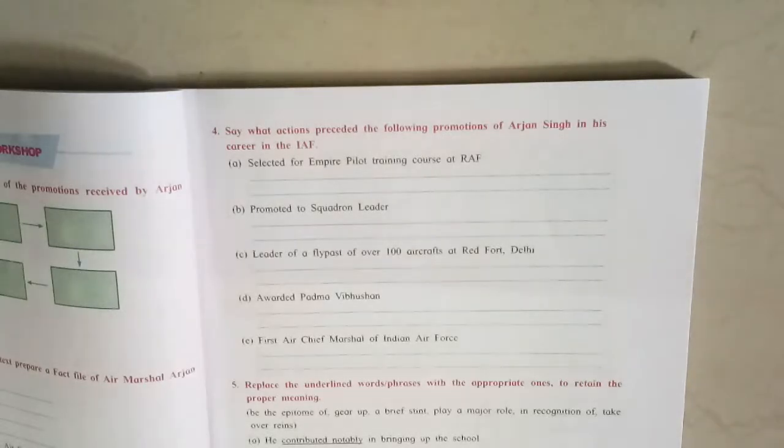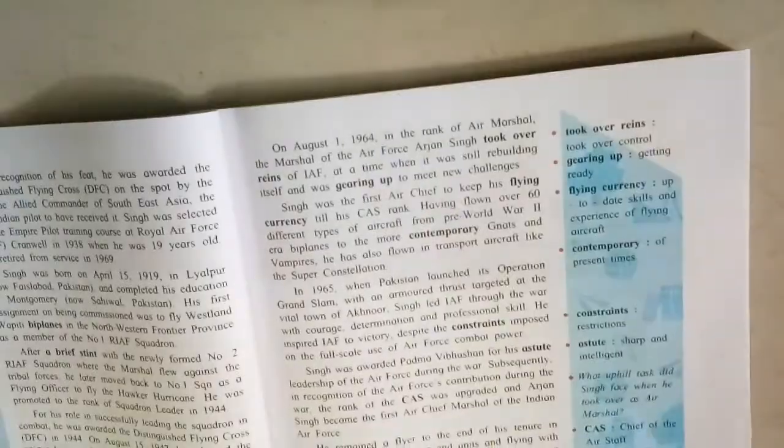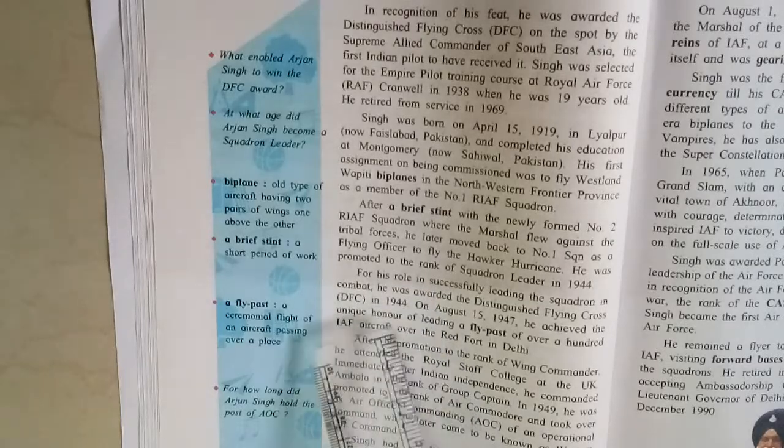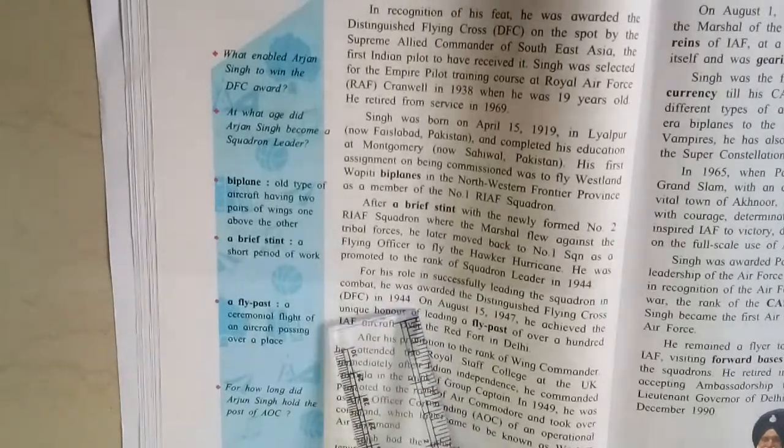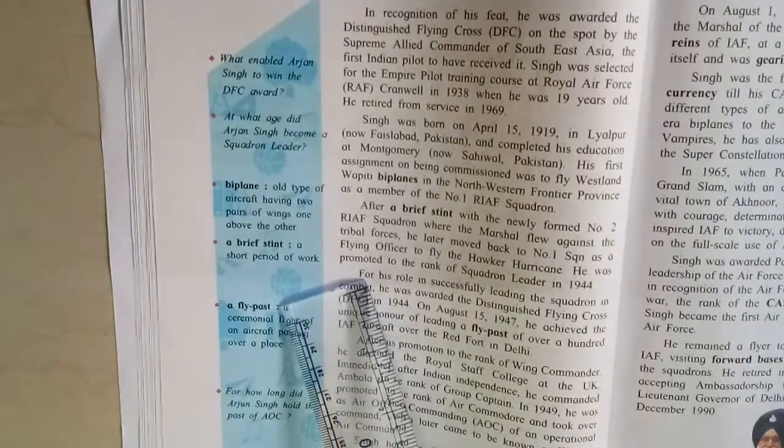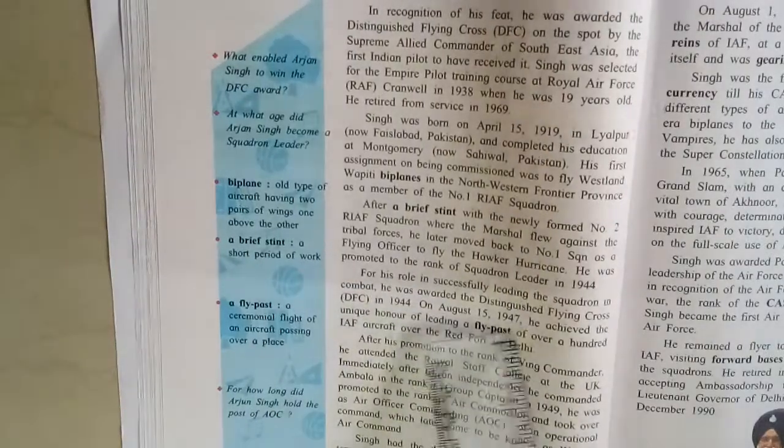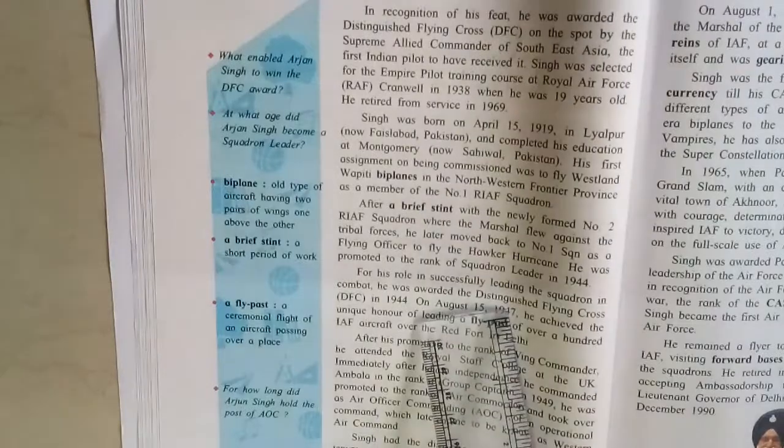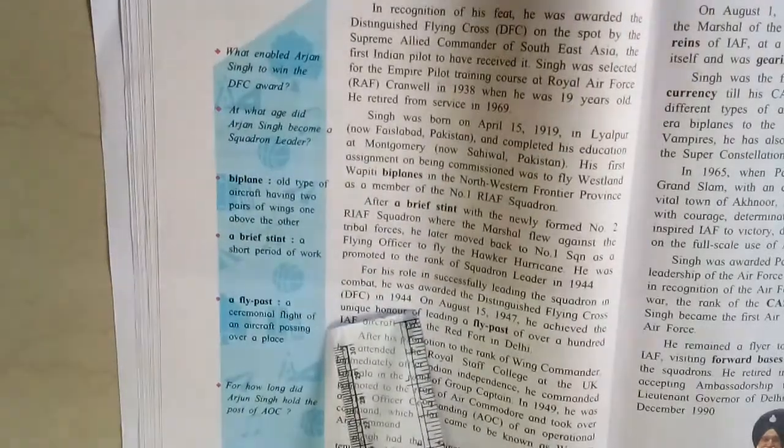Is it clear? Now next, question C: Leader of a flypost over 100 aircrafts at Red Fort Delhi. Page number 16, fourth paragraph. See here. For his role in successful [fill in the blanks] in 1944. That answer is found from 'for his role' till 'flying officer' in 1944. Clear?